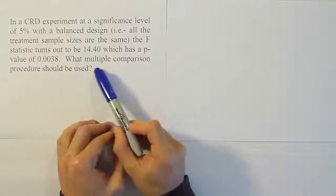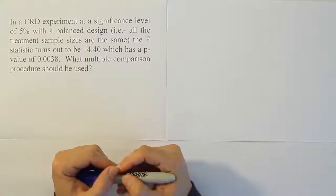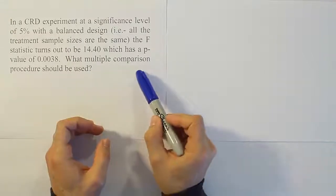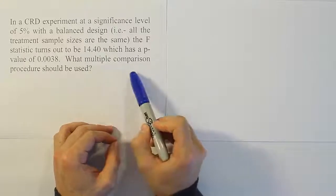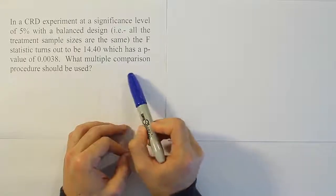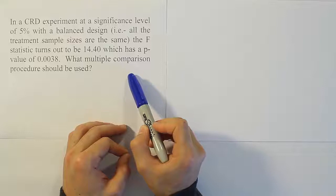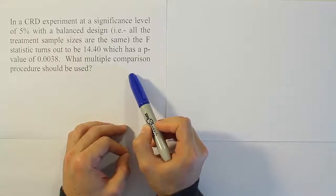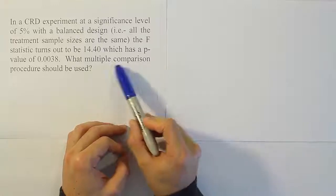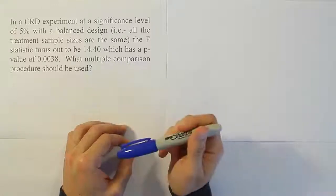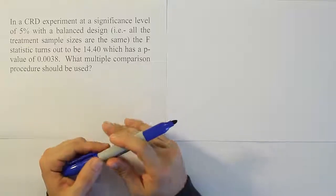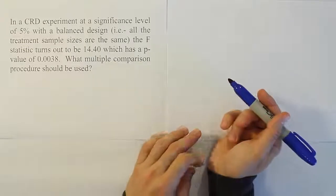The first thing you want to do to answer this question is to see if it's even appropriate to be using a multiple comparison procedure. We should only be using this procedure if we decided to reject the null hypothesis. Because once we reject the null hypothesis, then what we know is that at least one of the means is different from the others, but we don't know which mean is different. The multiple comparison procedures allow us to determine which means are significantly different. We only should worry about that if we rejected the null hypothesis.